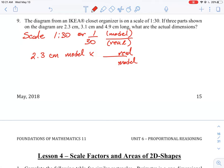So this means that we could put the model on the bottom which is 1 and the real value on top which is 30. So then by unit analysis the models cancel out and this means that we're left with 2.3 times 30 which is the centimeters for the real object. So this will give us 69 centimeters for the real object.